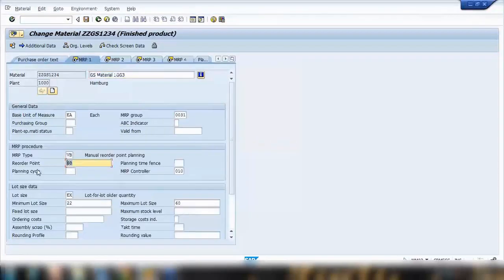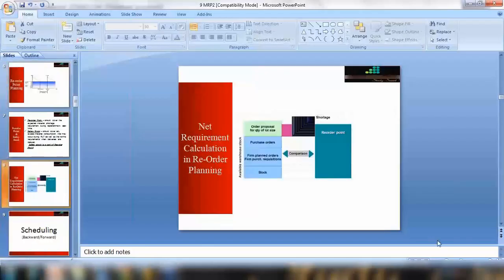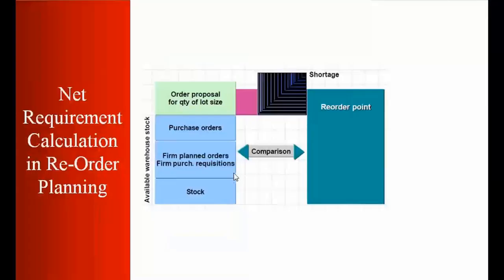As soon as the stock falls below 60, it will trigger an MRP run and create requirements — we will see in the next topic how to run MRP and how it creates requirements. There is also something called net requirement calculation in reorder point planning, which deals with handling shortages.